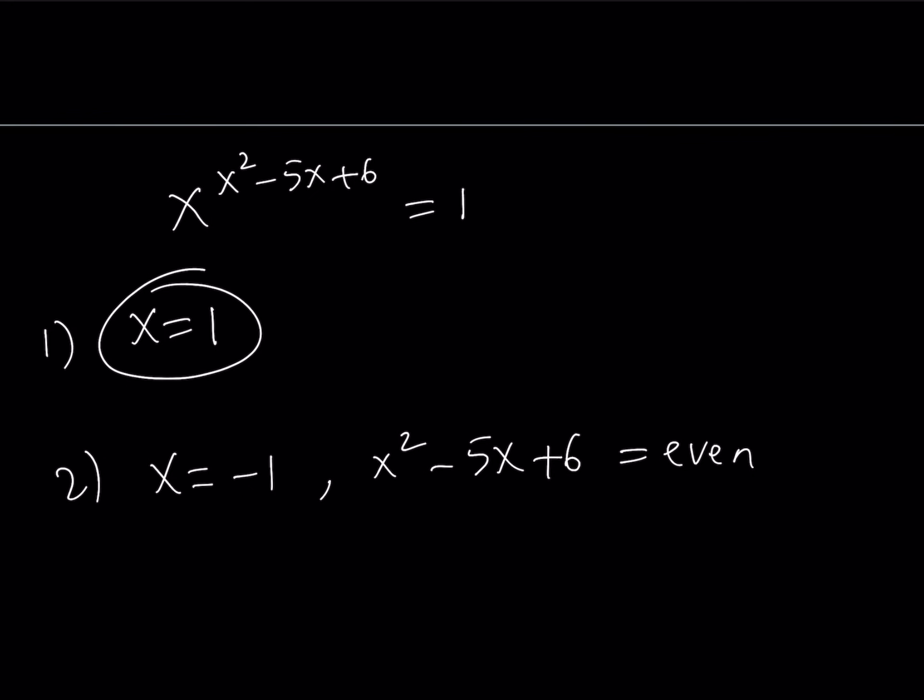What if x is odd? If x is odd, x squared is also odd. 5x is also odd. Odd minus odd is going to be even. Plus 6 is also going to be even. So this result, x squared minus 5x plus 6 is always going to be even regardless of the value of x.